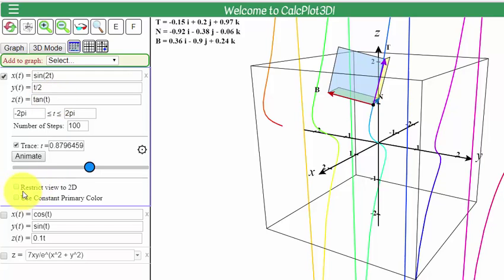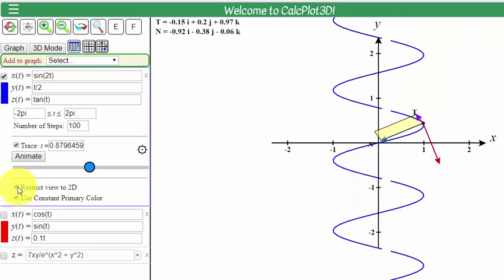What we could do is we can restrict to 2D. What this has done is it just projected onto the xy plane. What this does is it just ignores the z of t and sketches out the x of t and y of t. Now we can see the unit normal and the unit tangent vector in the xy plane on the space curve.